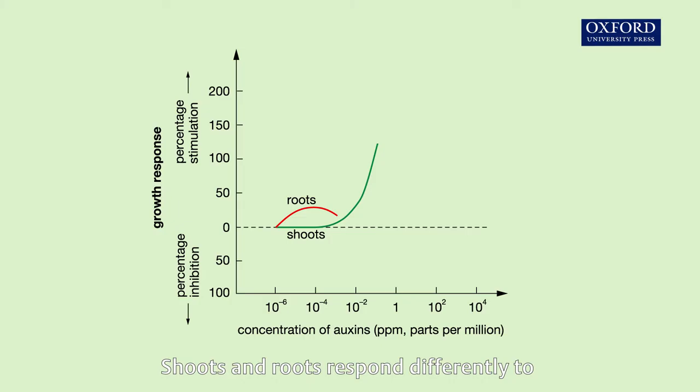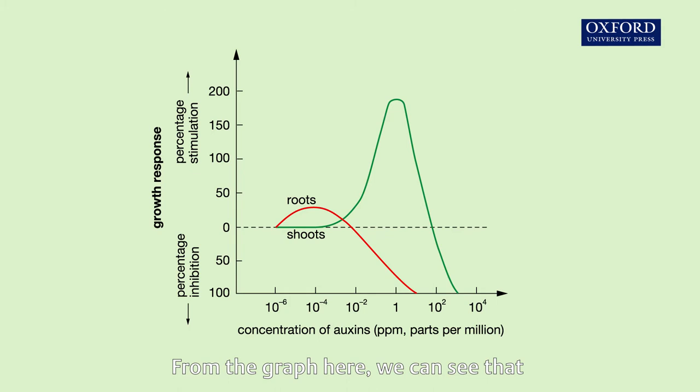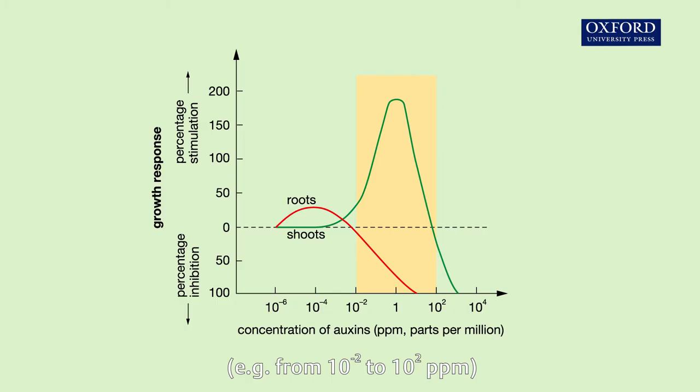Shoots and roots respond differently to different auxin concentrations. From the graph here, we can see that high auxin concentrations, for example from 10 to the power of minus 2 to 10 to the power of 2 ppm, promote shoot growth but inhibit root growth.